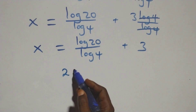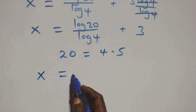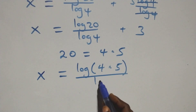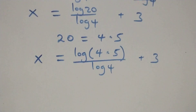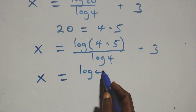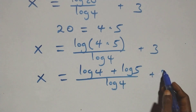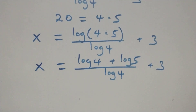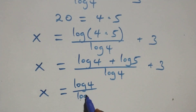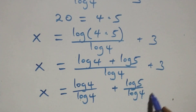And also here, 20 is the same thing as 4 times 5. Then here, 20 is the same thing as 4 times 5, so we have log of 4 times 5 over log 4 plus 3. This also follows the log product rule, and we have x equals to log 4 plus log 5 over log 4 plus 3. Then here, we separate this into two fractions: x equals to log 4 over log 4 plus log 5 over log 4 plus 3.